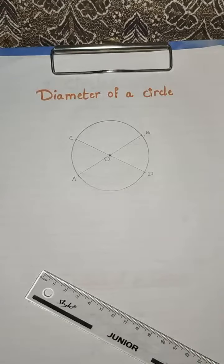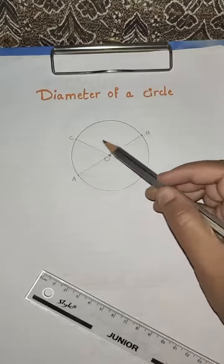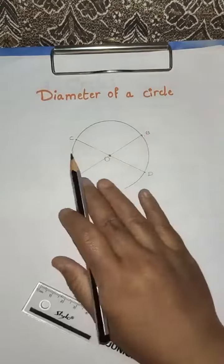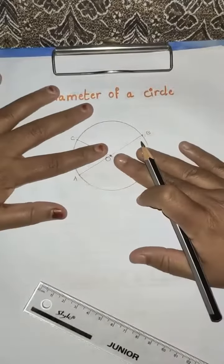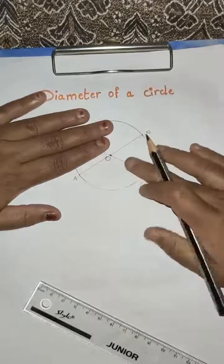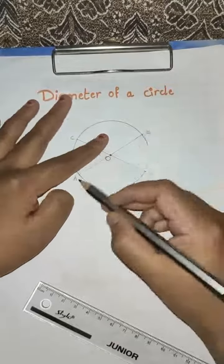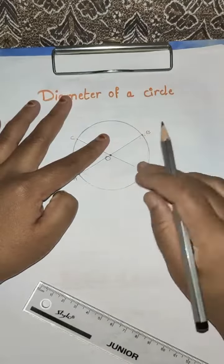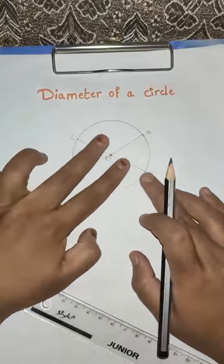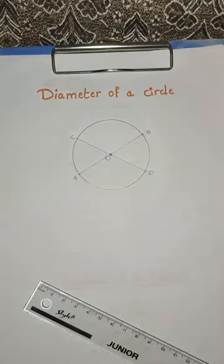Understood children? The diameter divides the circle into two halves. You can see here AB — AB is the diameter. This diameter divides the circle into two equal parts. Understood children — what is diameter?